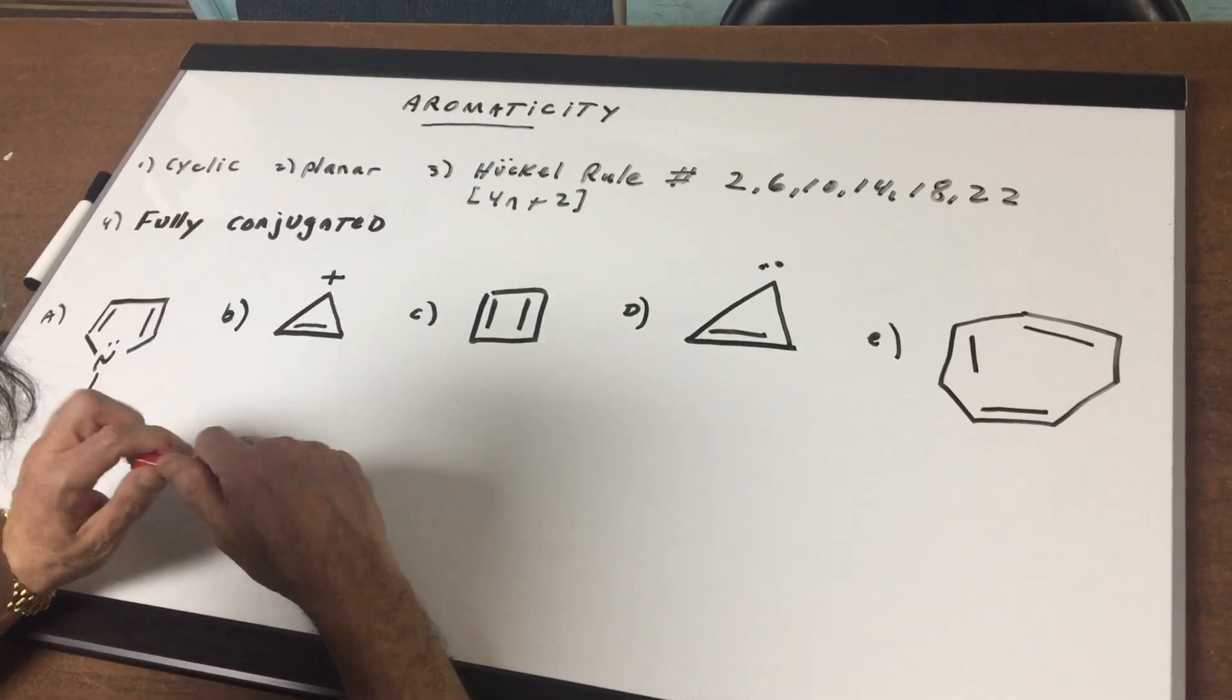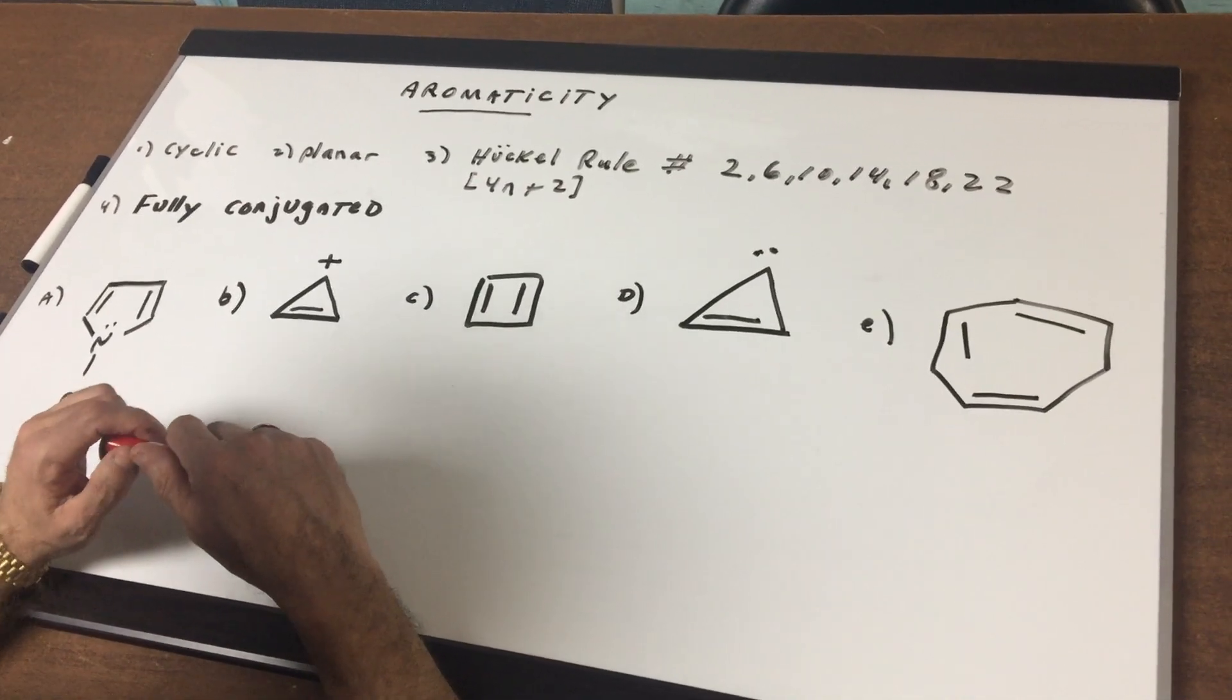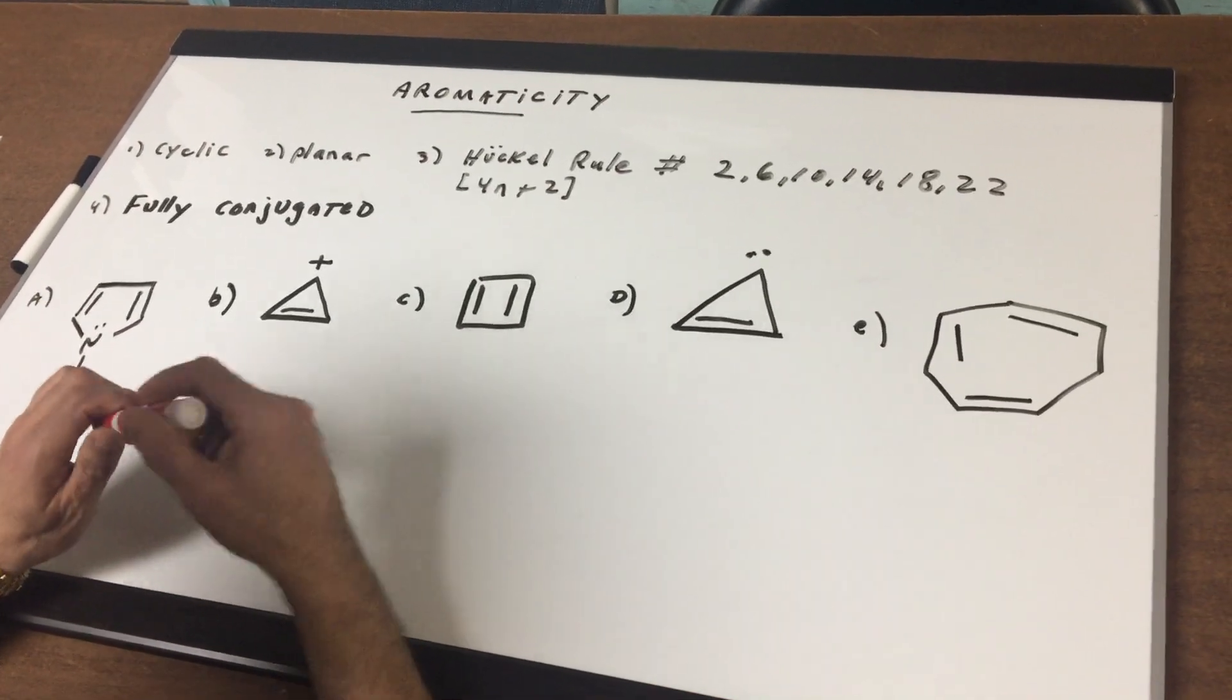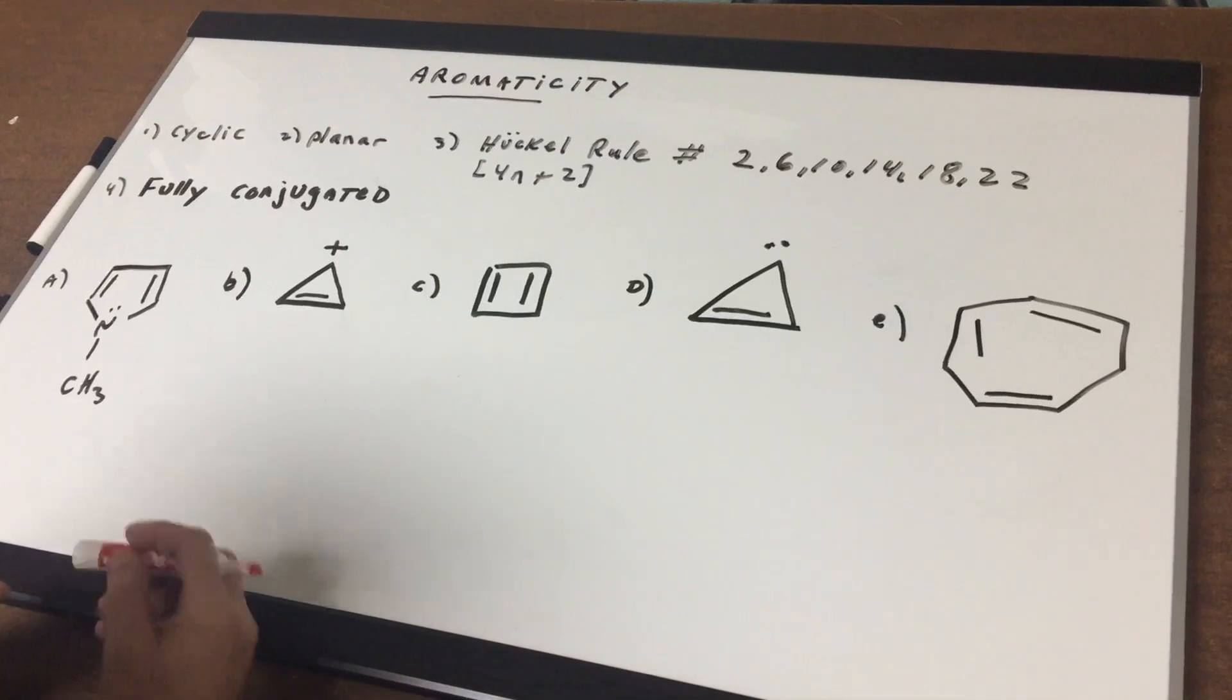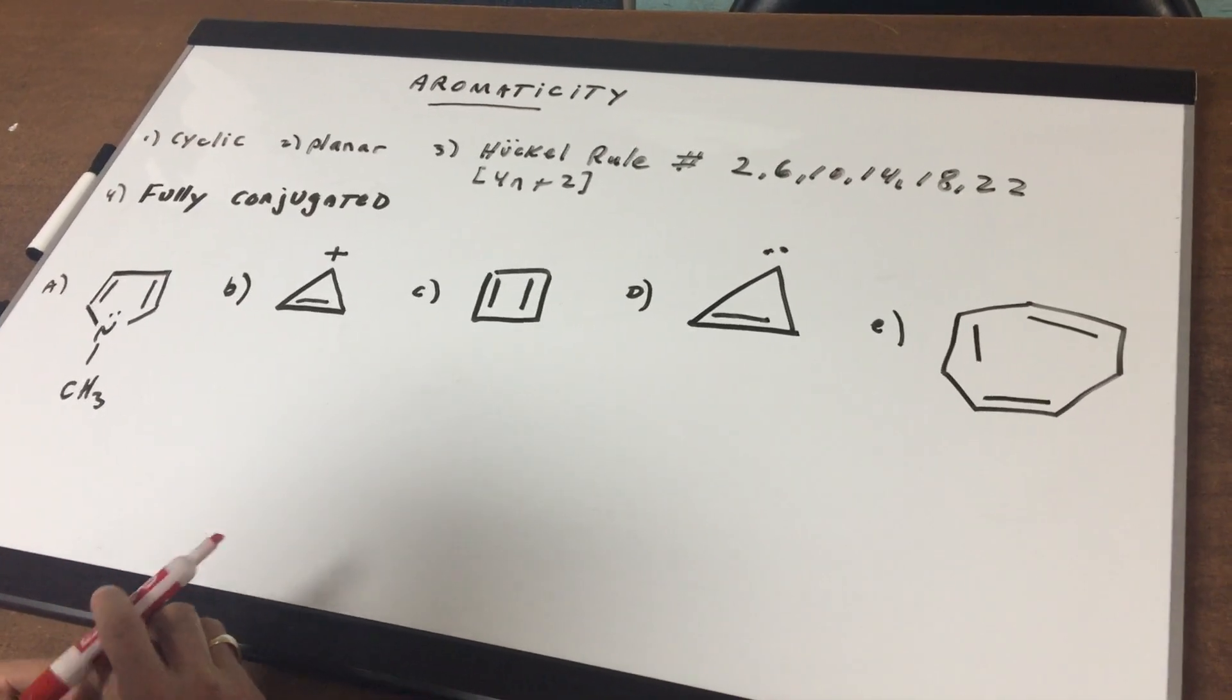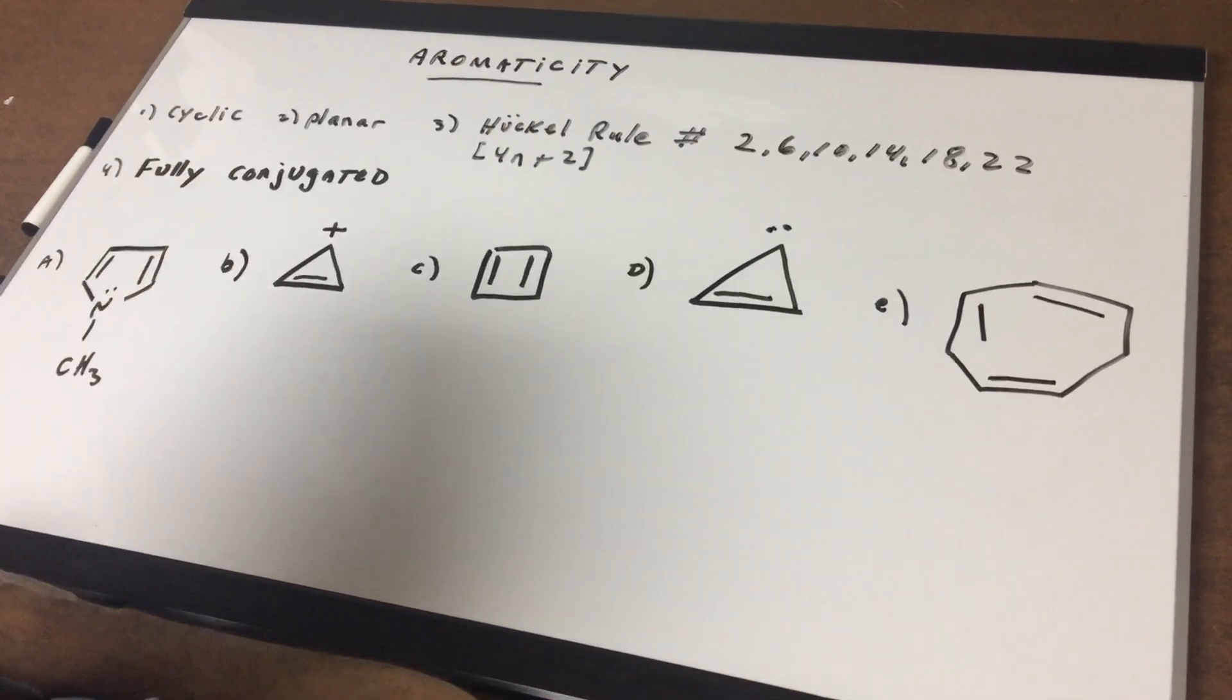Aromaticity imparts a very unusual stability into a molecule. So the first thing you want to remember is aromaticity goes hand in hand with stability. In order to be aromatic, usually you think of a benzene ring, but other types of systems could be aromatic. And there's four things we must look for. One, it must be cyclic.